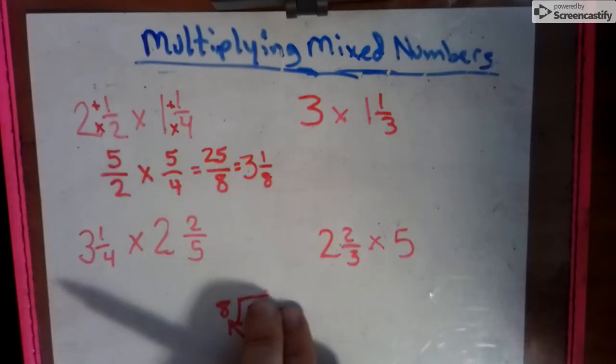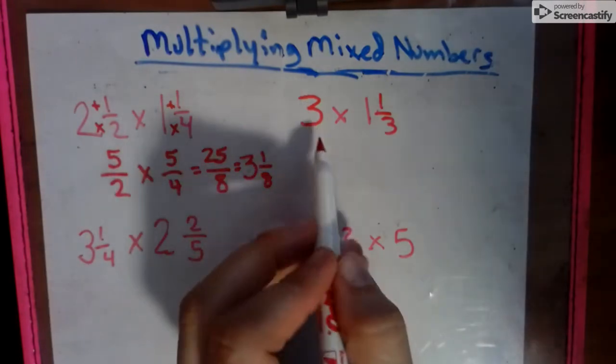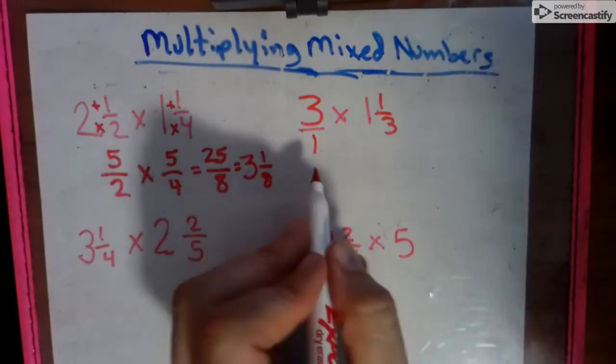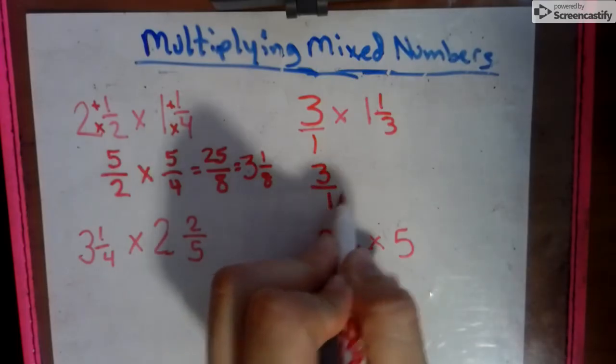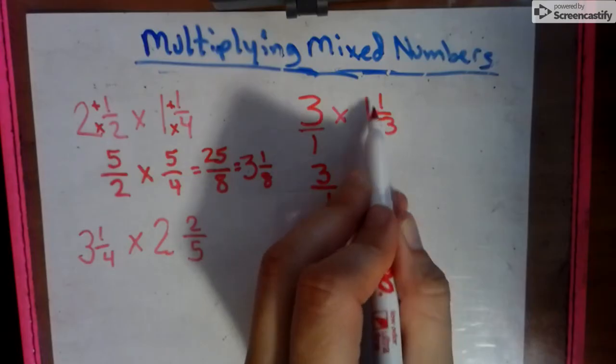So I'm going to get rid of this. You can keep it in your notes. We're going to look at another one. Recalling all whole numbers go over 1. So we put a 1 underneath it. I'm just going to bring that down, keep that sign. And then I'm going to make an improper fraction out of this.